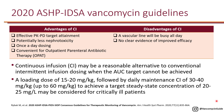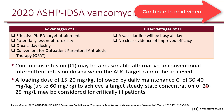The 2020 ASHP/IDSA vancomycin guideline states that continuous infusion may be a reasonable alternative to conventional intermittent infusion when the AUC target cannot be achieved. For critically ill patients, a loading dose of 15 to 20 mg/kg is recommended, followed by a daily maintenance continuous infusion of 30 to 40 mg/kg, targeting a steady-state level of 20 to 25 mg/L. Once at steady state, it doesn't matter whether the level is random, peak, or trough—they are all the same.